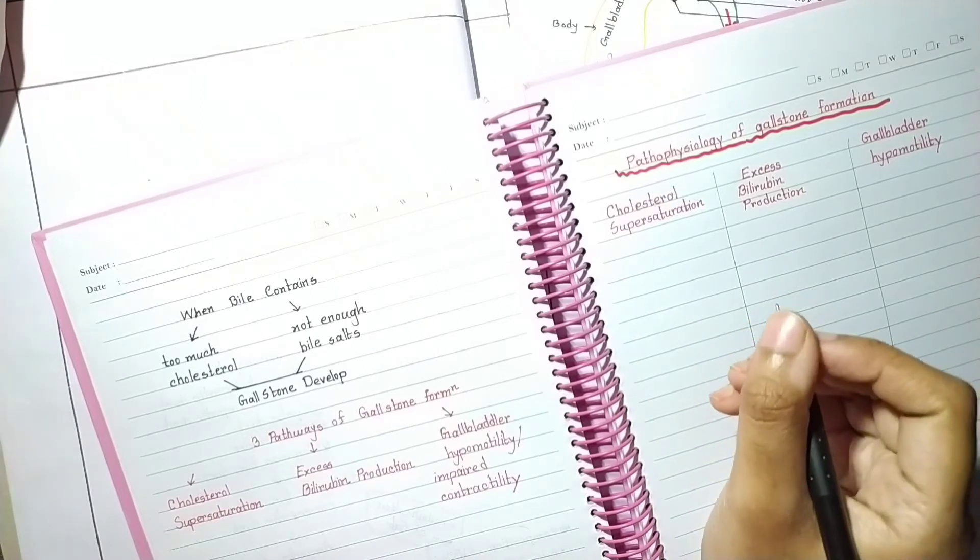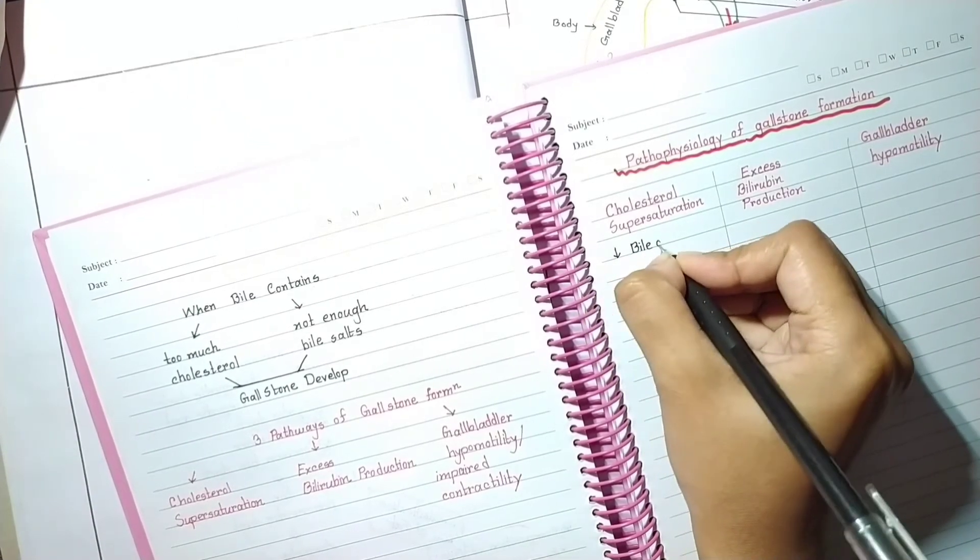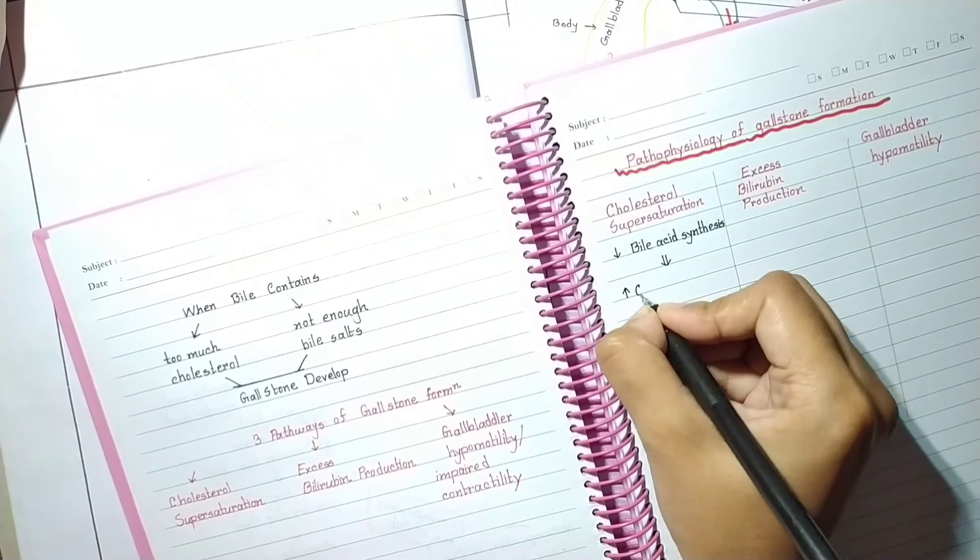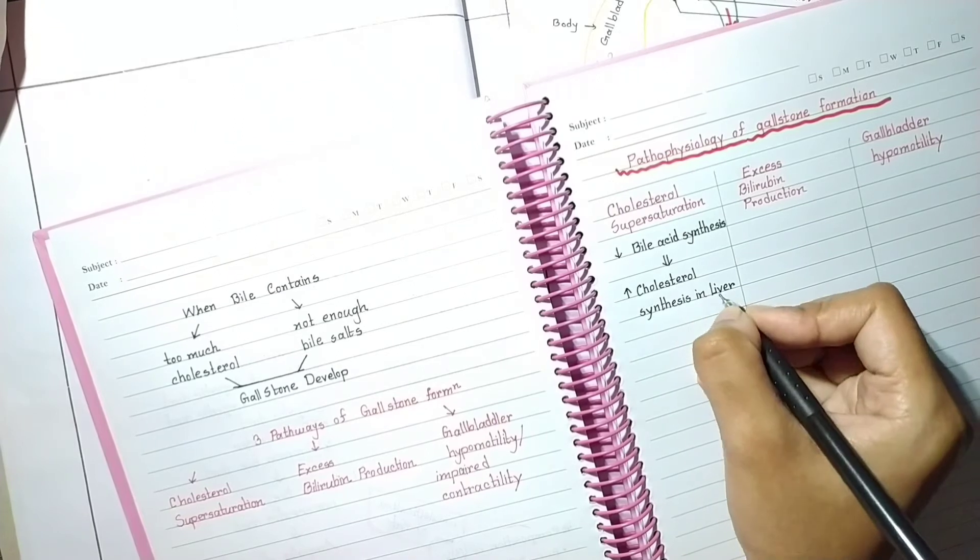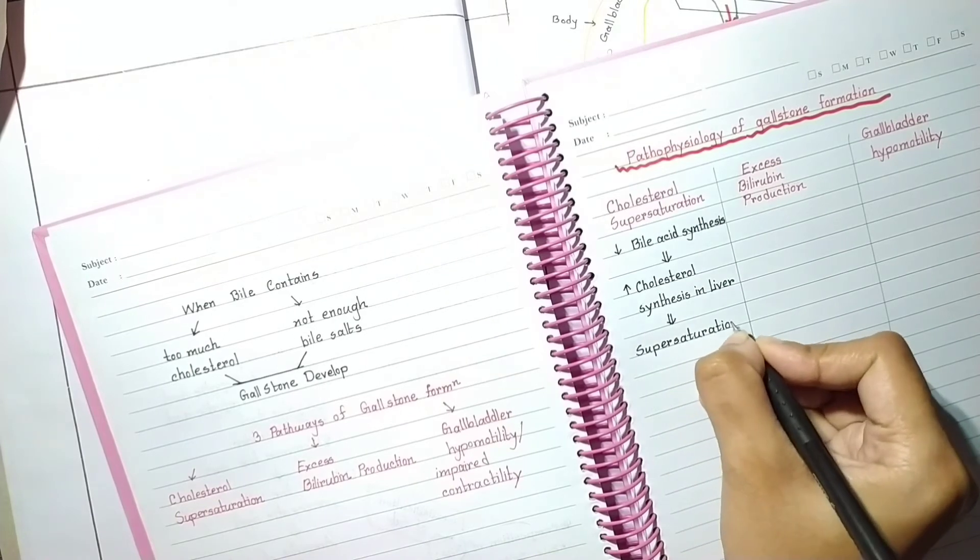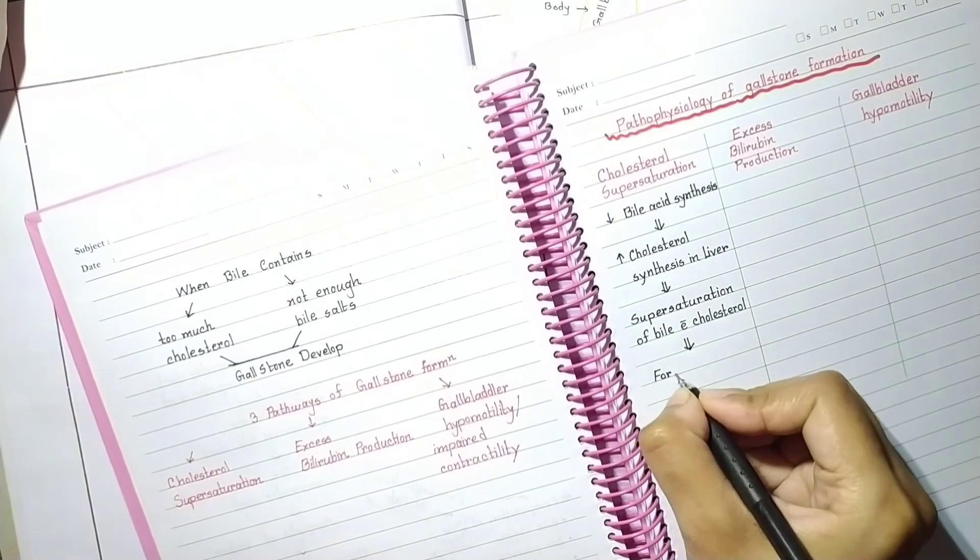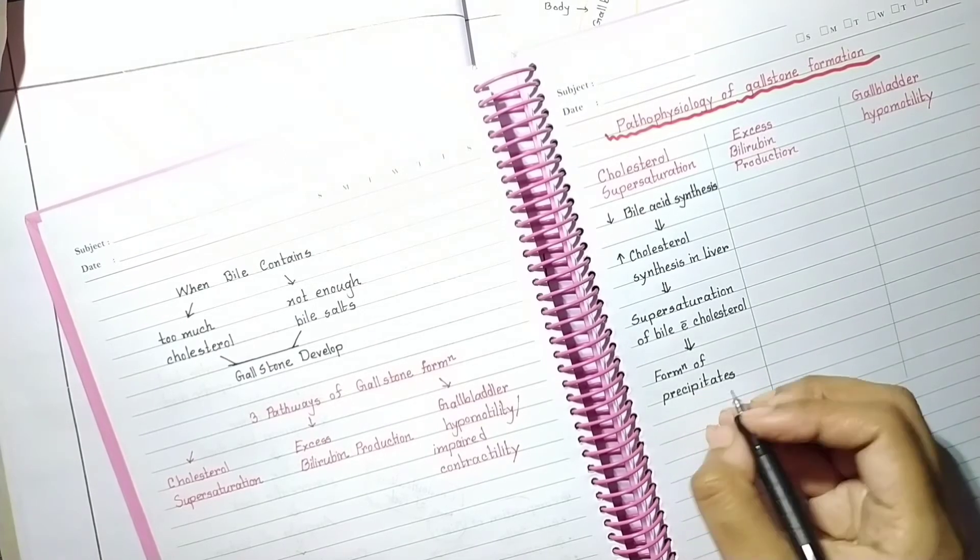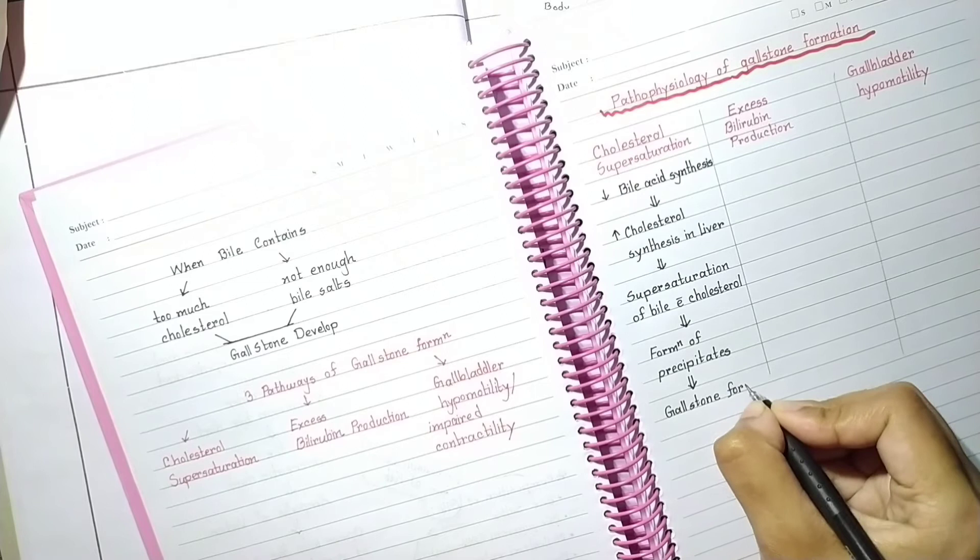As you know, bile acids solubilize cholesterol and prevent cholesterol precipitation. But in case of cholesterol supersaturation, bile acid synthesis is decreased and cholesterol synthesis in liver is increased. Then supersaturation of bile with cholesterol occurs, which leads to formation of cholesterol precipitates, which are further trapped by mucus hypersecretion, and then gallstone formation occurs.